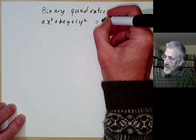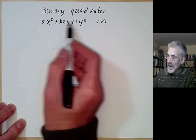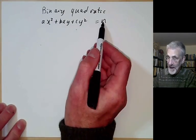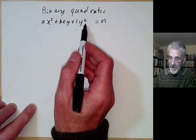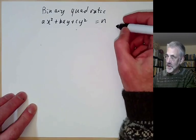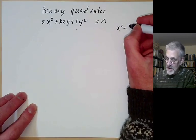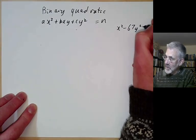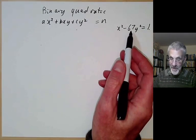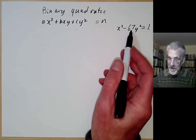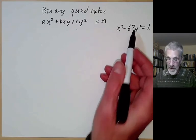We want to be able to solve this equation. Given a, b, c, and n as integers, we want to find x and y solving this. For example, last lecture we discussed the equation x squared minus 67y squared equals 1, and showed how we could find some non-trivial solutions of this, apart from the trivial solution where y is zero.